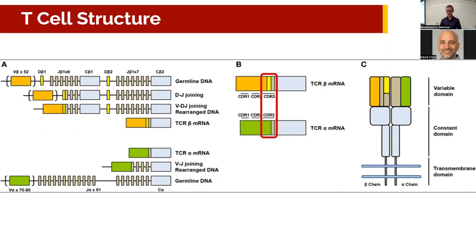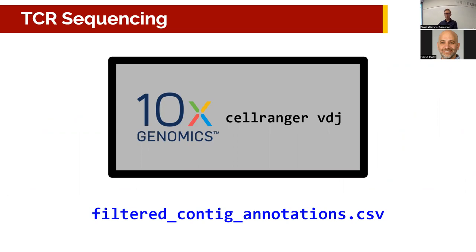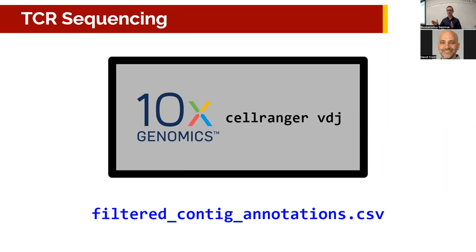I'm not going to get into the nitty-gritty details of how the sequencing works because I don't really understand them, but 10x has a pipeline for doing this type of sequencing — pretty standardized with commercially available kits. What you need to know is that the RNA gets collected by the lab and put through the 10x pipeline, specifically Cell Ranger VDJ, which takes all the reads and assembles those that fit together into contigs representing potential CDR3 regions for single cells.